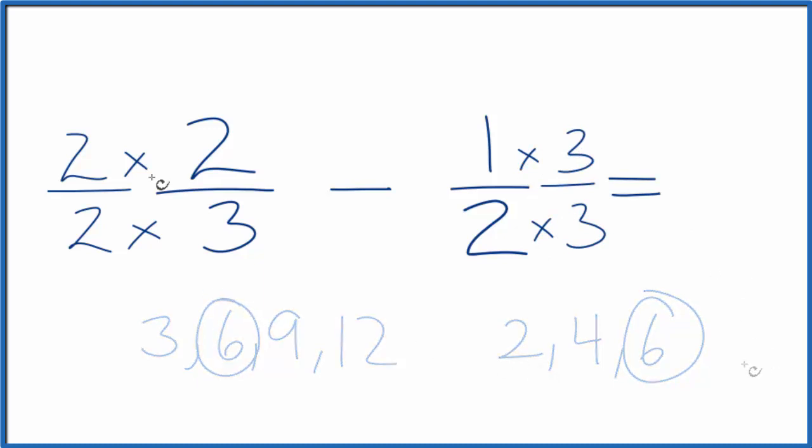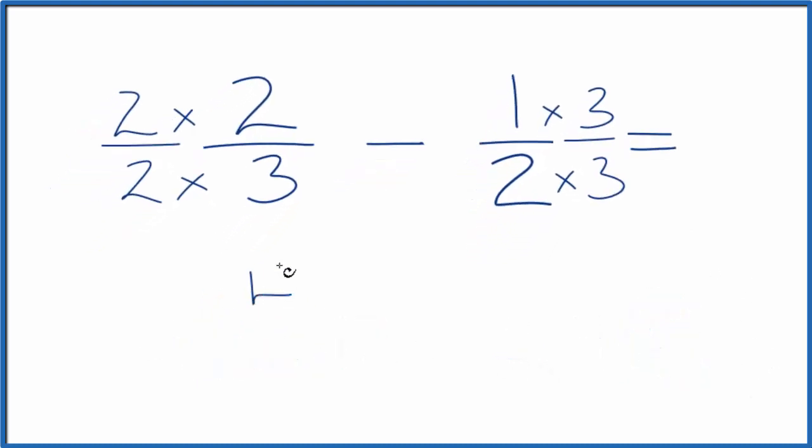So now, 2 times 2 is 4, 2 times 3 is 6, and two-thirds and four-sixths, they have the same value. You divide 2 by 3 and 4 by 6, you get the same number.